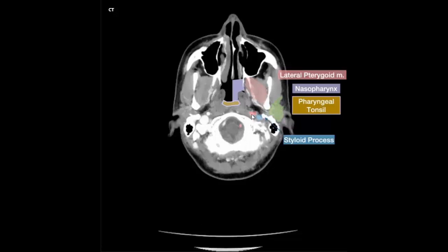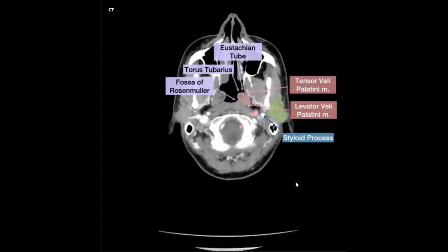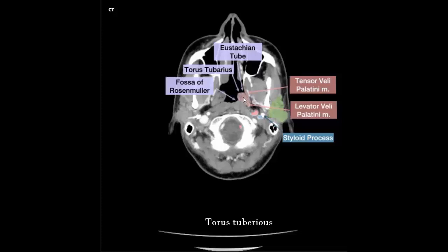Internal carotid artery, jugular vein, styloid process, right and left vertebral artery. Fossa of Rosenmüller, torus tubarius, Eustachian tube, tensor veli palatini muscle, levator veli palatini muscle.